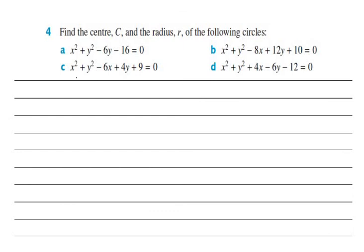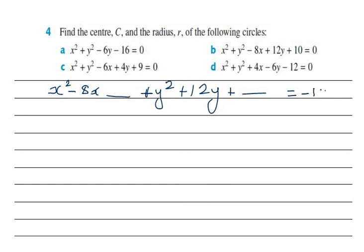Let's look at the next question. Rearranging in proper order: x² - 8x + y² + 12y = -10. I've moved the 10 to the other side and left gaps for completing the square.